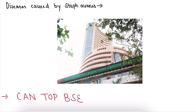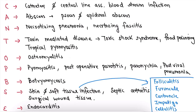The diseases caused by Staph. aureus are a lengthy list. We can remember them using the mnemonic CAN TOP BSC — think of Bombay Stock Exchange, remembering Staph. aureus as a stock. For C: catheter and central-line associated bloodstream infection.